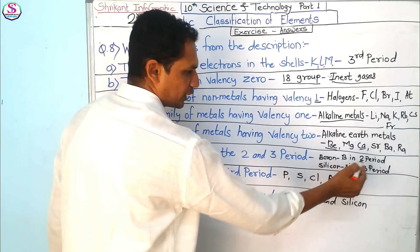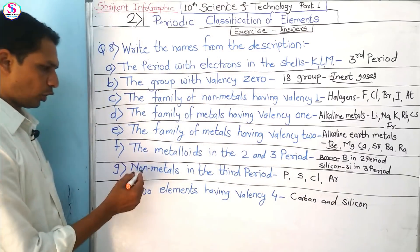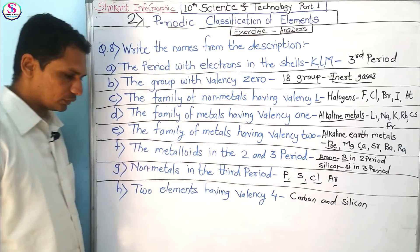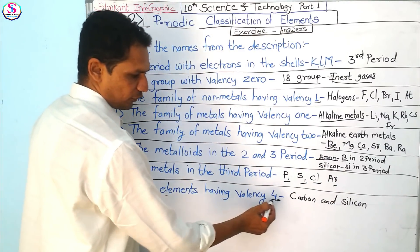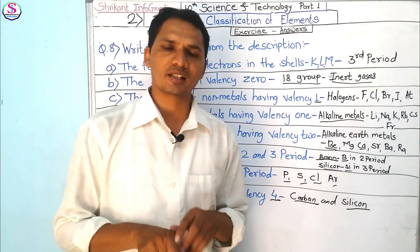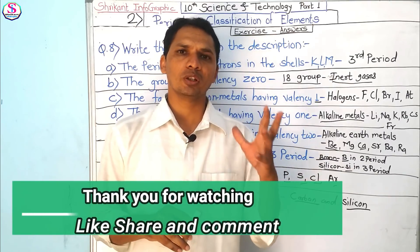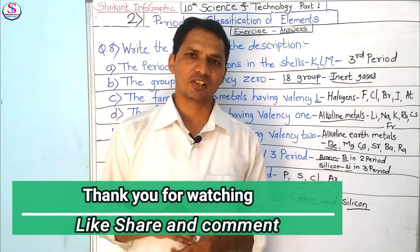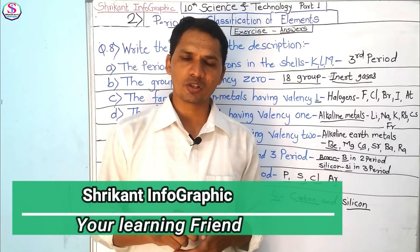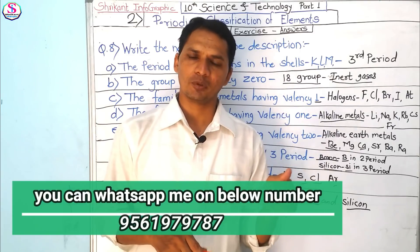The metalloids in the second period is boron, and in the third period is silicon. The non-metals in the third period are phosphorus, sulfur, chlorine, and argon. The elements having valence 4 (tetravalent) are carbon and silicon. We have now completed all the exercises of Chapter 2 on Periodic Classification of Elements. Thank you for watching — please like, share, and subscribe.